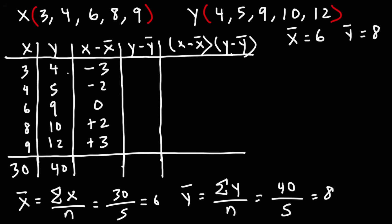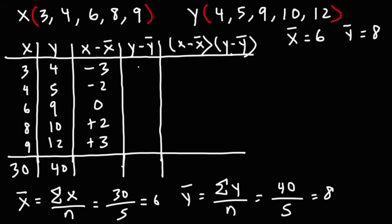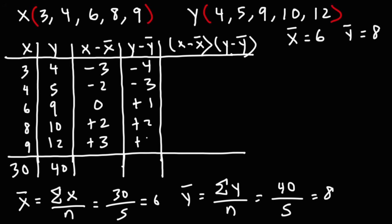For the y minus y-bar column, we subtract the sample mean of 8 from each y value: 4 minus 8 is negative 4, 5 minus 8 is negative 3, 9 minus 8 is positive 1, 10 minus 8 is positive 2, and 12 minus 8 is positive 4.